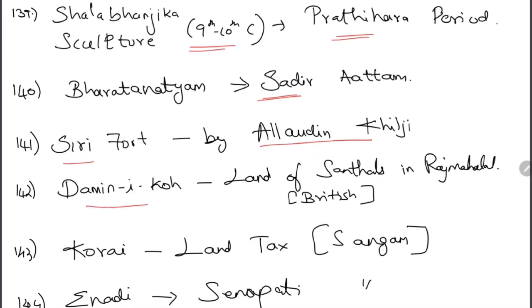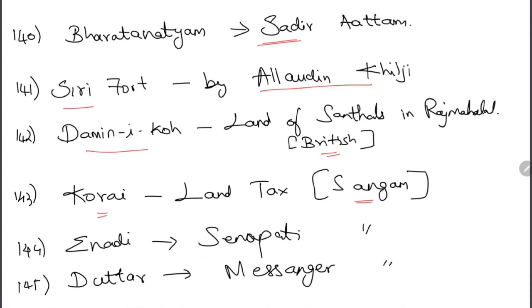Daman-e-Koh was land given to the Santal people in the Rajmahal region of Jharkhand during the British period in the 1800s. Korai was a land tax during the Sangam age. Nrd (Senapathis) were military commanders in the Sangam period. Duttar were messengers in the Sangam period — the actual word is 'Thudhar' but books write 'Duttar.'